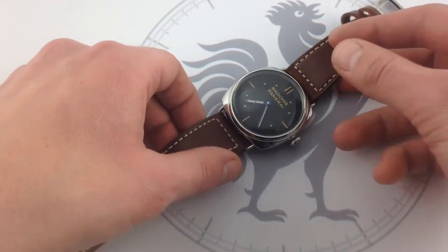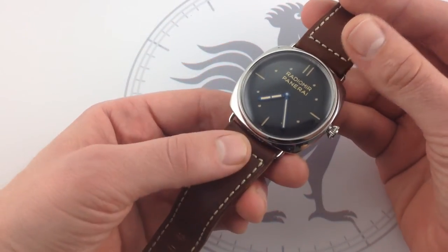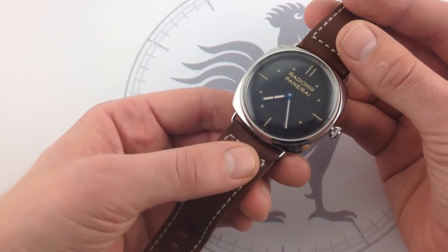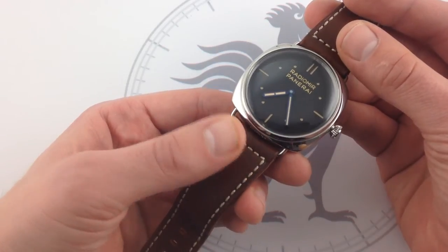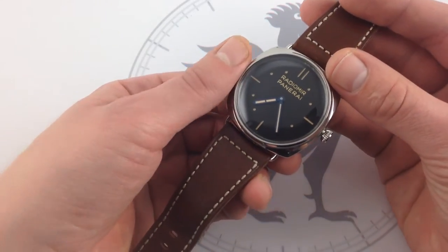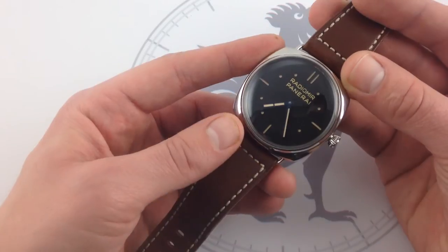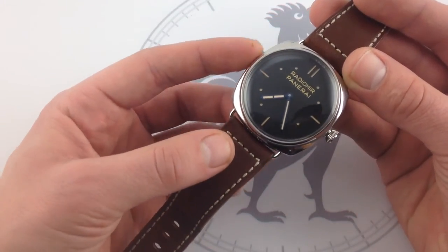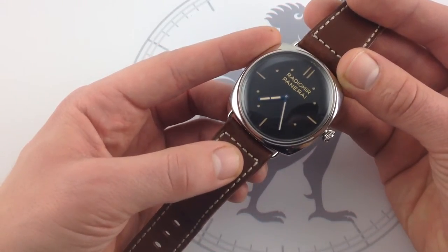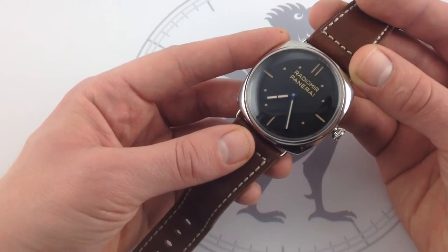What you see here is the modification of that original California dial. There are two siblings in this 2012 Special Series year. There was the 448, which was the California dial, representative of the last of the California dialed Panerais. And then there was the watch that represented the newer breed of Panerai dials, the stage two of Panerai production in the historical period. And that's the 449, the SLC Three Days.